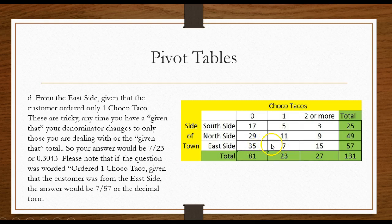But note if they said what is the probability they ordered one Choco Taco given that they were from the east side. If it was given they were from the east side, they're saying the denominator is 57. So it'd be 7 out of 57.